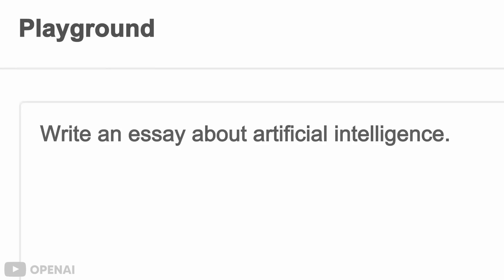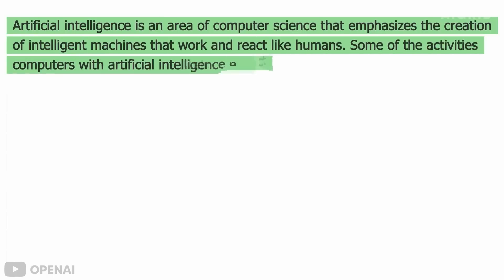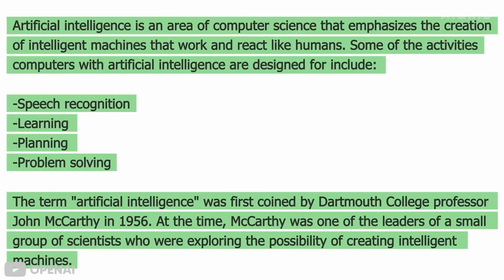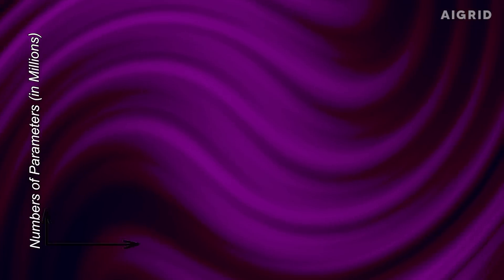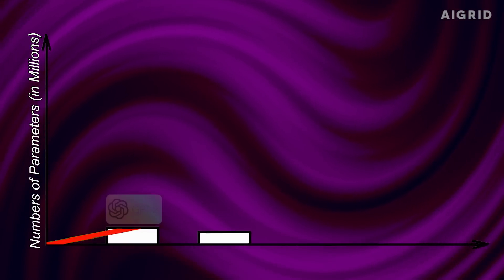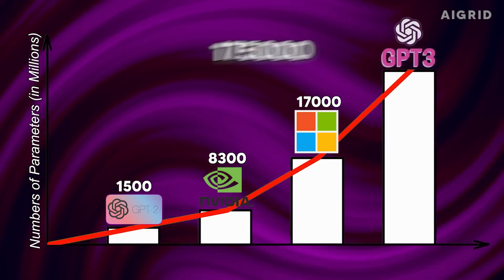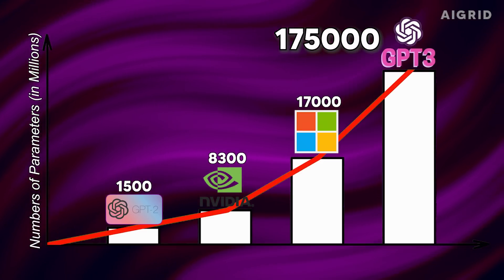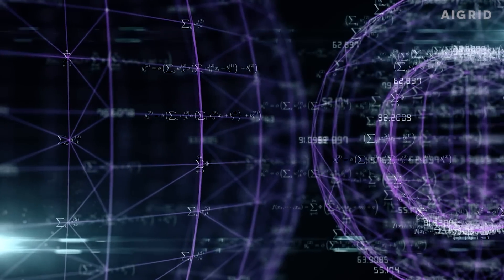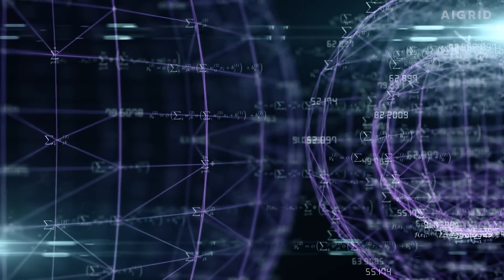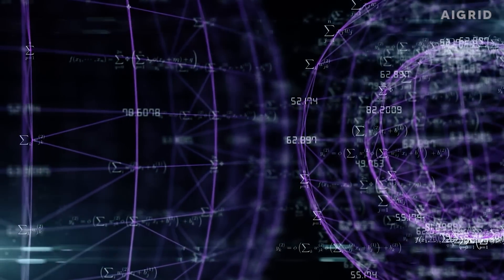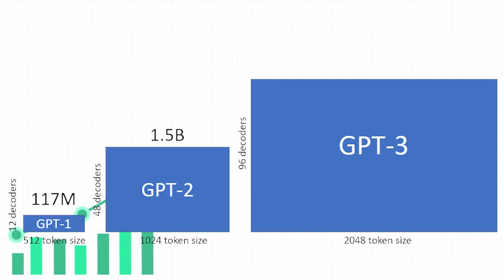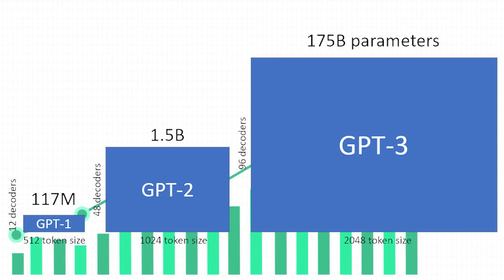With not so much input, GPT-3 produces huge amounts of precise and complex computer text. Over 175 billion machine learning parameters are included in the advanced learning neural network used in GPT-3. GPT-3 was the greatest neural network ever created as of early 2021, superior to all earlier models such as GPT-1 and GPT-2.